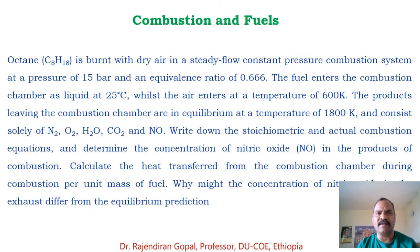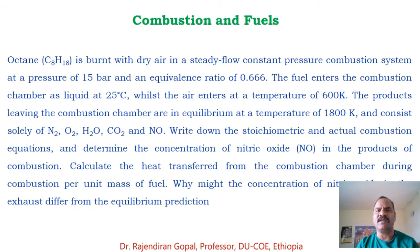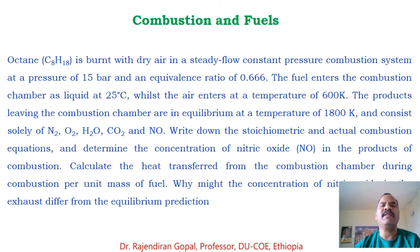The fuel enters the combustion chamber as liquid at 25 degrees C, while the air enters at a temperature of 600 Kelvin. The products leaving the combustion chamber are in equilibrium at a temperature of 1800 Kelvin and consist solely of N2, O2, H2O, CO2, and NO. Write down the stoichiometric and actual combustion equations and determine the concentration of nitric oxide in the products. Calculate the heat transferred from the combustion chamber per unit mass of fuel, and discuss why the concentration of nitric oxide in the exhaust might differ from the equilibrium prediction.